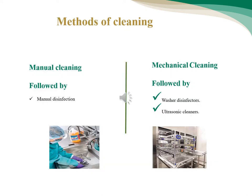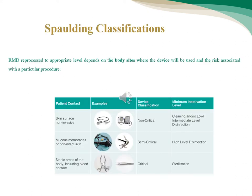Methods of cleaning: Manual cleaning followed by manual disinfection, or mechanical cleaning followed by washer disinfector or ultrasonic cleaner. Spaulding Classification: Reusable medical devices are reprocessed to the appropriate level depending on the body site where the device will be used and the risk associated with the particular procedure. تصنيف الآلات الجراحية يتم حسب استخدامها داخل جسم المريض.